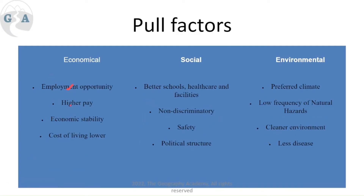Pull factors toward urban areas include employment opportunities, higher pay, economic stability, and more options — meaning if you lost a job there would be more alternatives. Cost of living is actually higher in cities, so that's not a pull factor. Better schools and facilities are pull factors, along with potentially less discrimination — there are more communities and more open-minded people toward different religions and sexual orientations. Safety can go both ways: more police and CCTV presence, but also higher overall crime rates in urban areas.